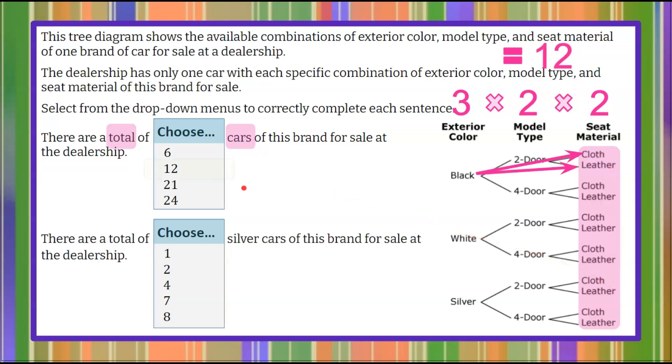There are 12 different cars on the lot. So again there's a black two-door cloth, a black two-door leather, and then black four-door cloth, black four-door leather. So there's four black cars on the lot. We can do the same with the white, another four, and another four silver. So that's total of 12 cars on the lot.